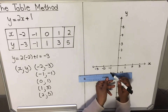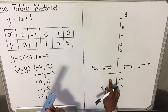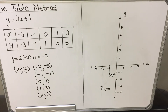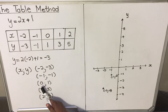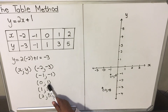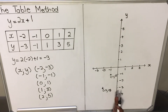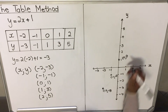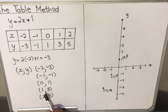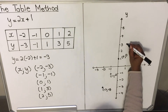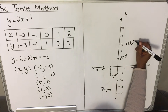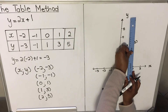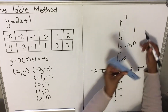The next coordinate is (-1, -1): x is -1, y is -1 — draw your slight guide lines and mark the point. Next, (0, 1): when x is 0, the point is on the y-axis, so x = 0, y = 1. Then (1, 3): x is 1, y is 3 — mark that coordinate. Last one: (2, 5) — x is 2, y is 5 — mark that point as well.